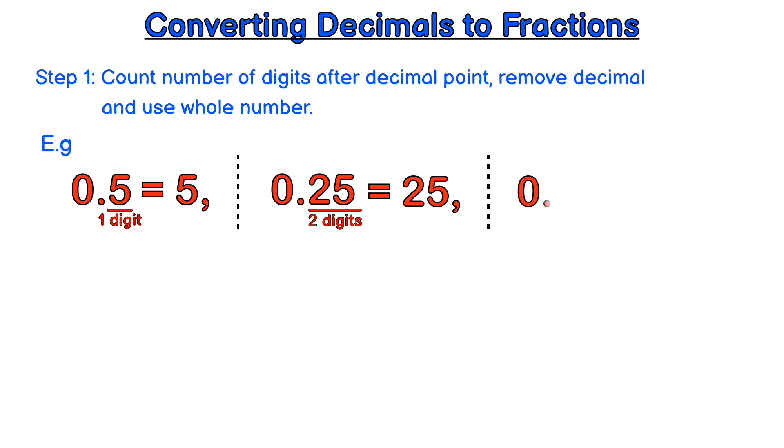What about if we had 0.123? We notice there are three digits after the decimal, remove the decimal and just use the whole number. So we have 123.